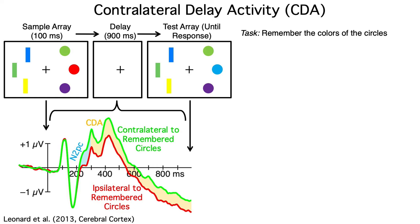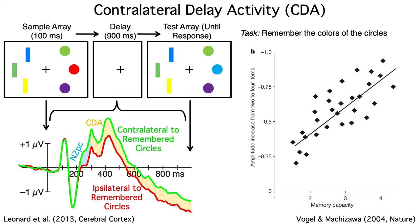The N2PC reflects the initial focusing of attention onto a visible stimulus, and the CDA represents the maintenance of information in working memory after the stimulus has disappeared. One of the coolest things about the CDA is that it's strongly correlated with individual differences in behaviorally measured working memory capacity. It's not often that you can see such a strong correlation between brain activity and individual differences in cognitive ability.